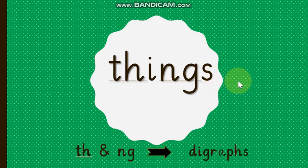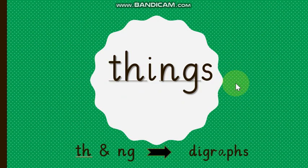First of all, you are going to find two digraphs in this word. TH is a digraph — two letters, one sound. NG is the other digraph in this word — two letters, one sound. So let's read it with sounds: TH, I, NG. Let's blend it — THINGS. The word is THINGS with two digraphs.